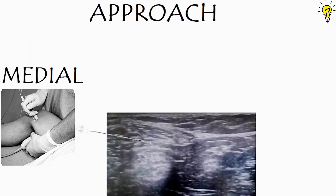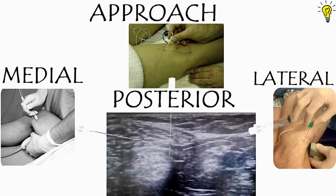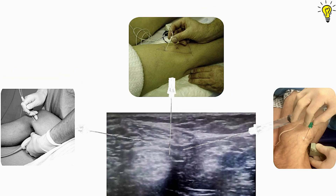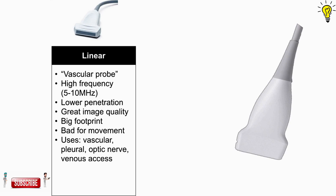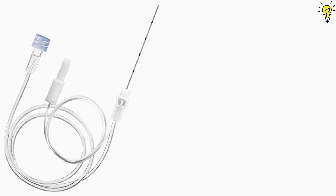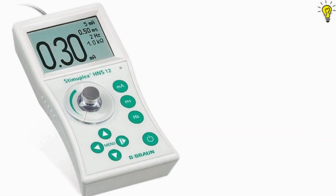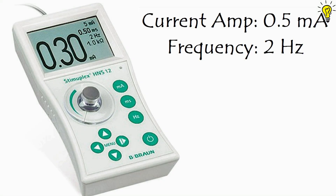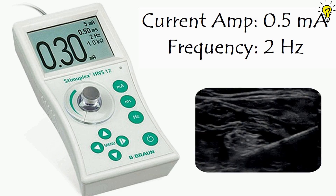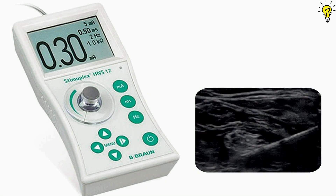For the approach, the nerves can be targeted medially, posteriorly, or laterally. Use a linear high-frequency transducer probe for better resolution with lesser penetration. For the needle, use a small 5 cm nerve-stimulating needle — you can see markings on it for every centimeter. I use a nerve stimulator with the NYSORA technique: keeping the current at 0.5 mA, since we are already visualizing the nerve under ultrasound, rather than the textbook approach of starting at 1 mA and lowering to 0.4 mA.